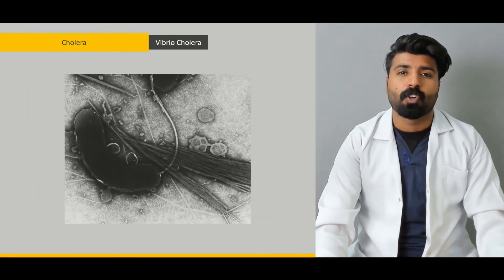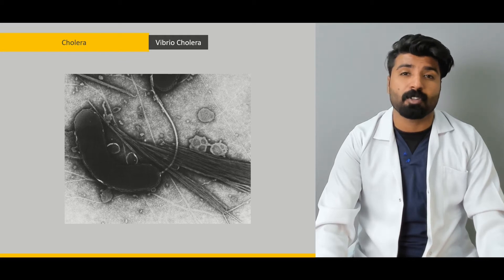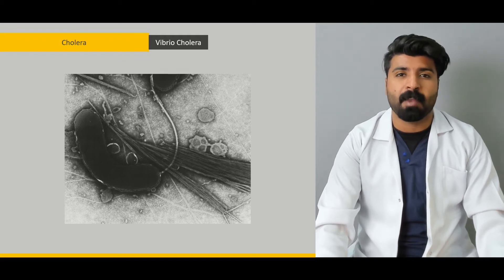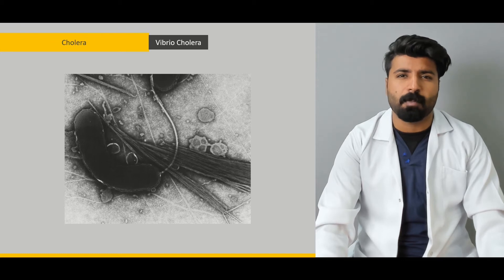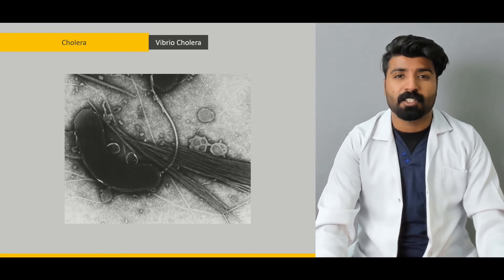First of all, we'll talk about what Vibrio Cholera is, what kind of bacteria it is, whether it's gram positive or gram negative, what form does it come in — whether it's rod shaped or comma shaped — and does it have any flagellum.